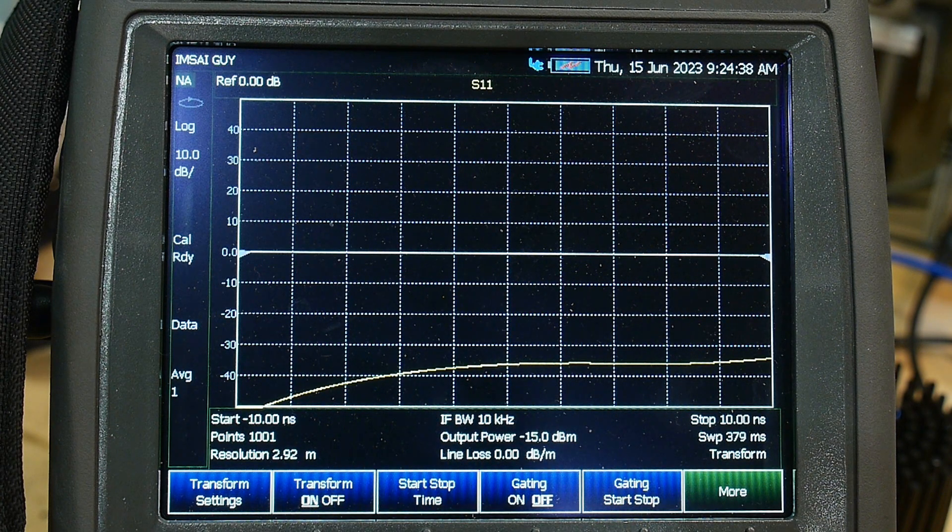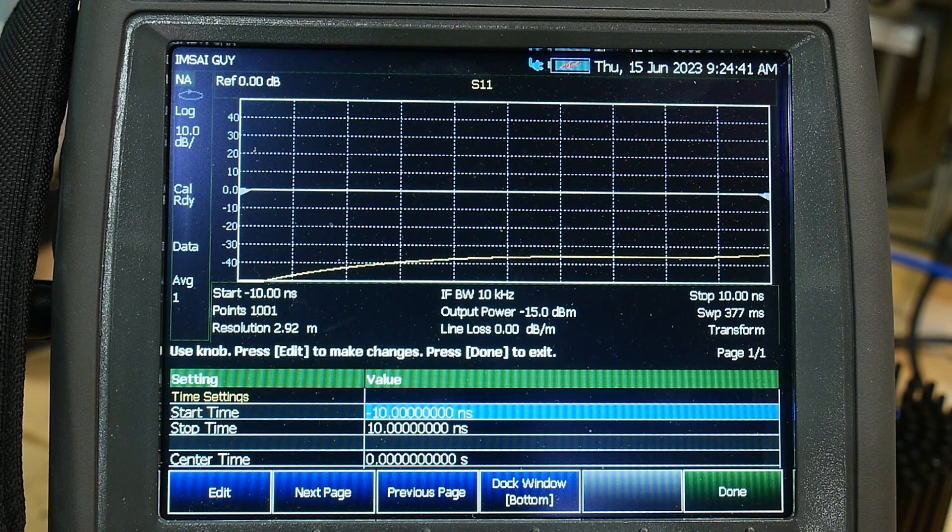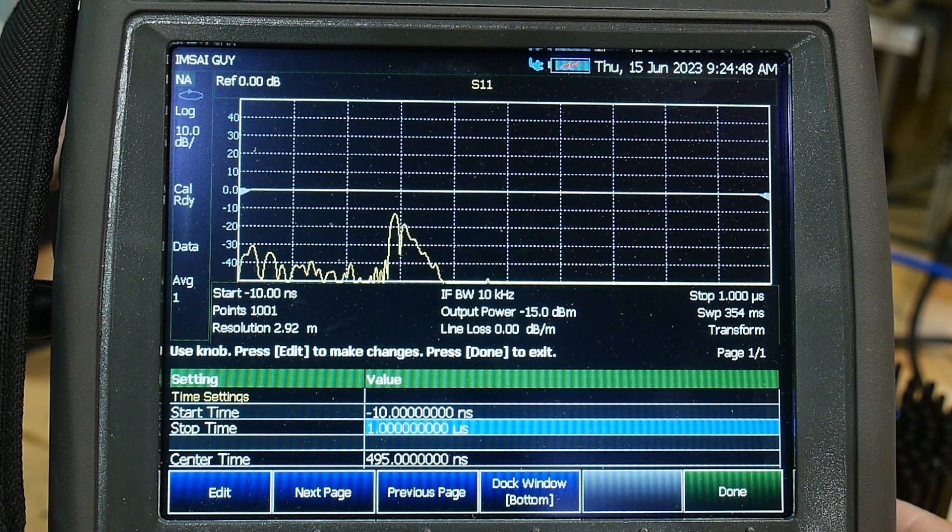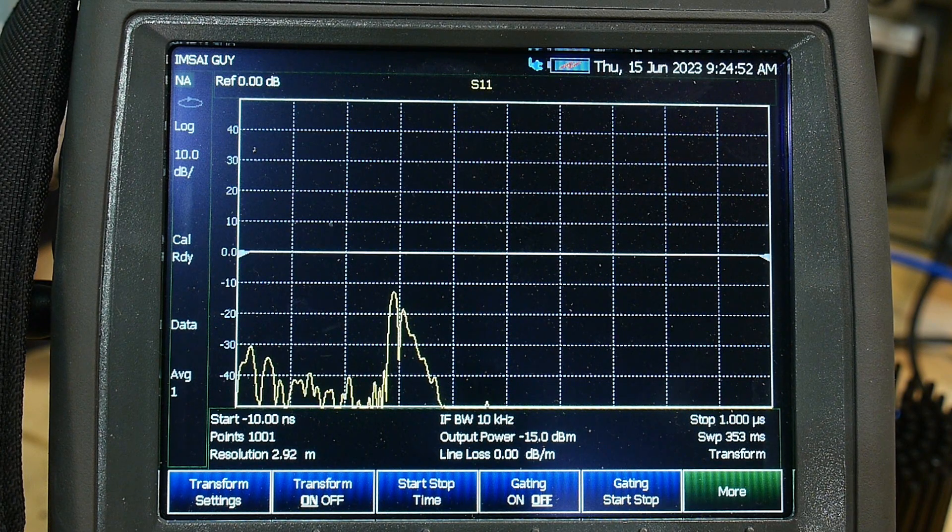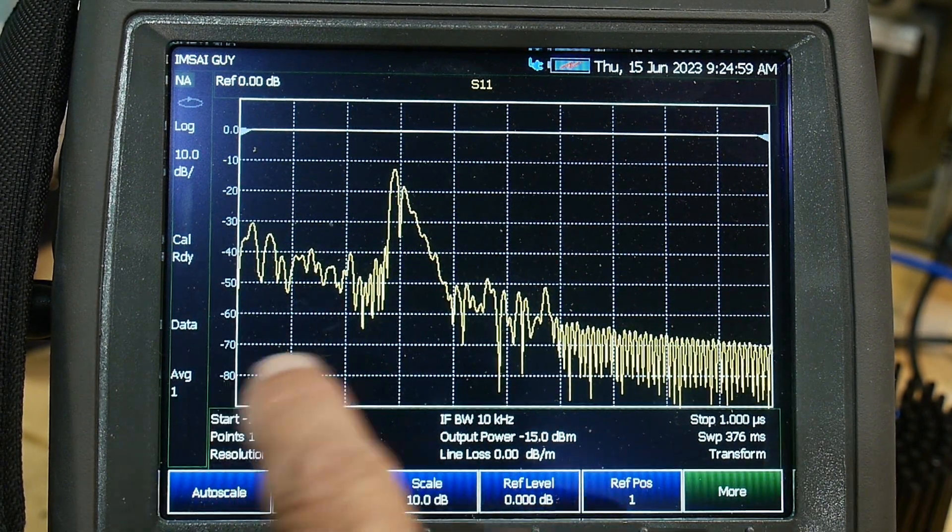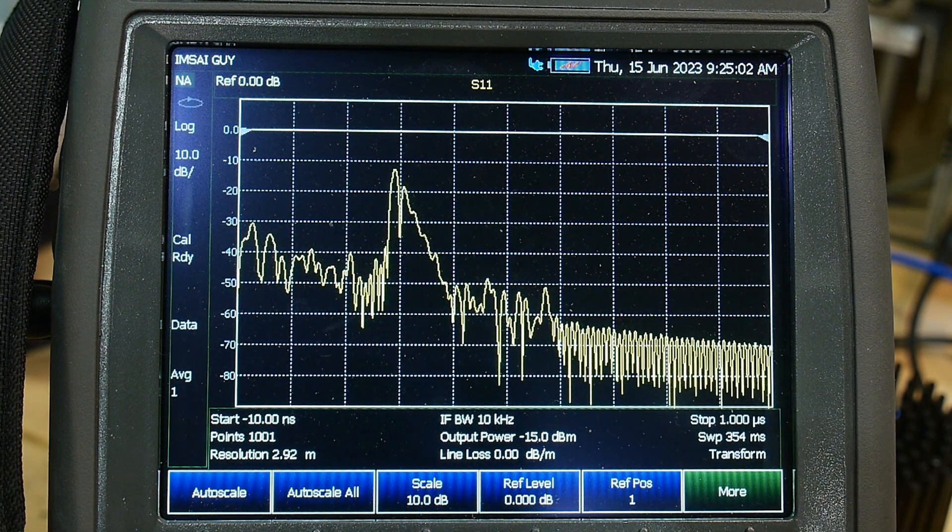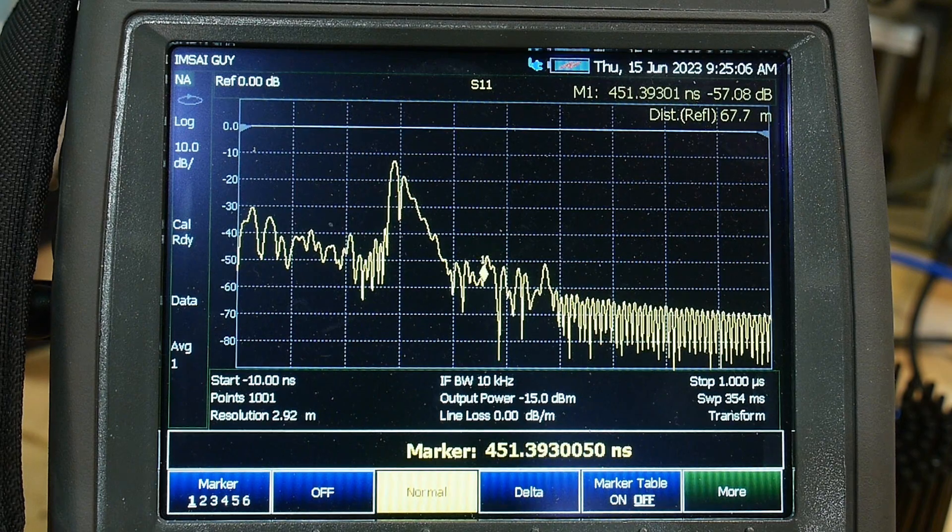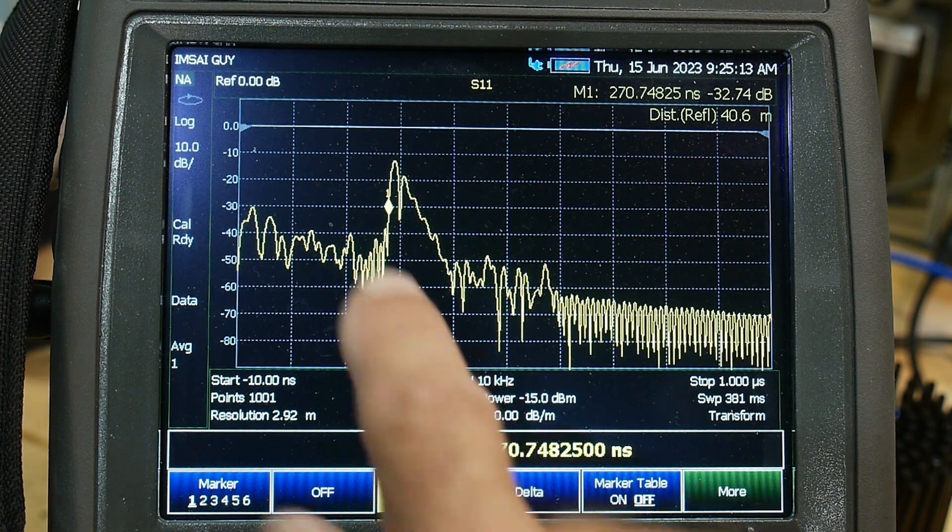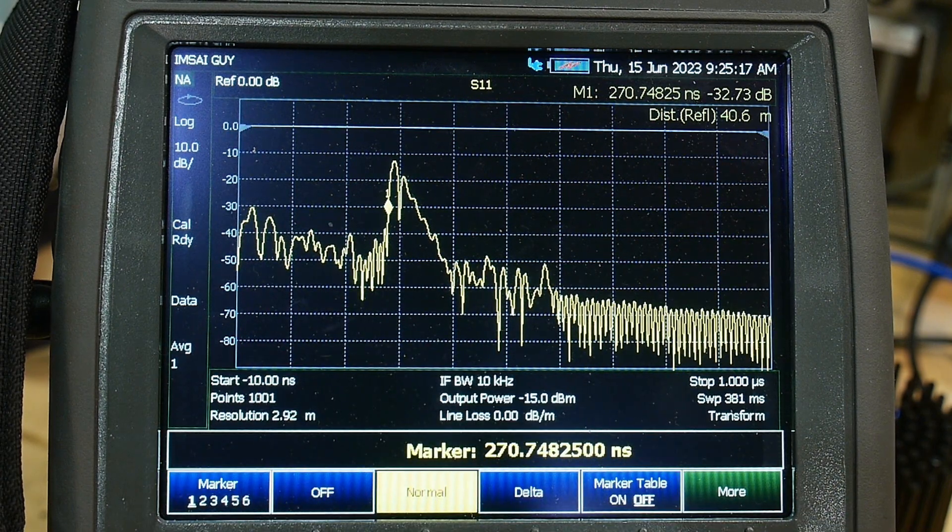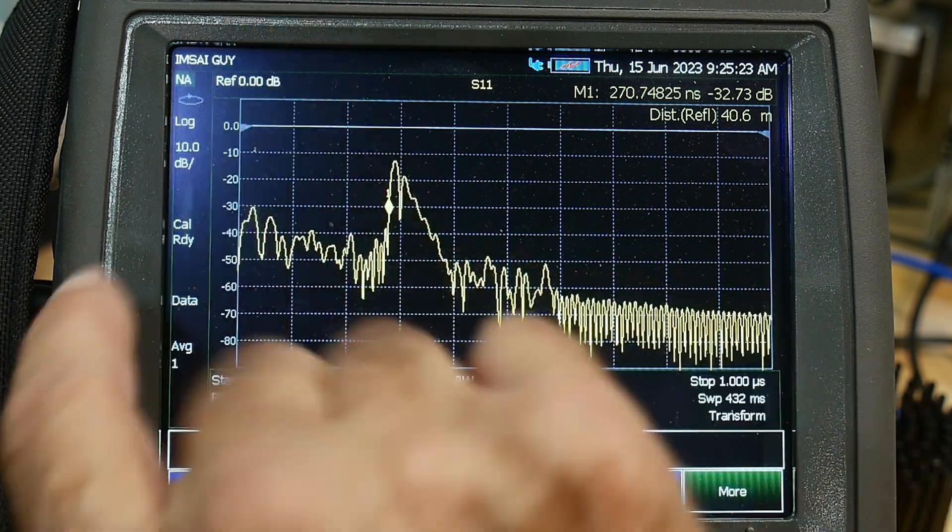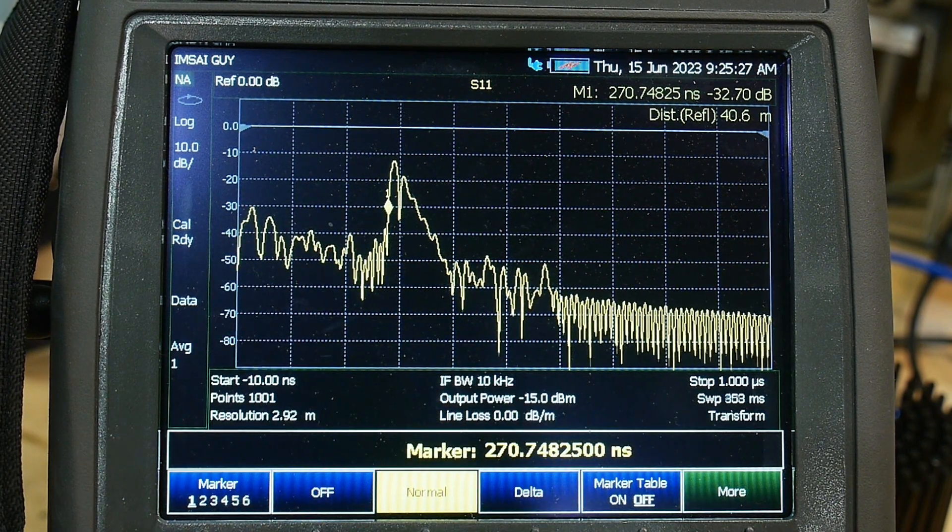And we get some funny picture. But what we really need to know is it's farther away. So the stop is here at 10 nanoseconds and our reflection is going to be way up there. So let's set the start and stop time. So let's do the stop time at one microsecond. Here we are in time domain and we get the same kind of picture. It's going along just fine then we get this big interruption here, which is where the antenna is.